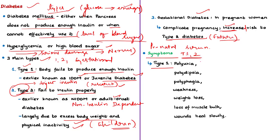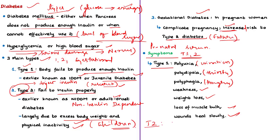Symptoms of Type 1 diabetes occur suddenly and include polyuria (frequent urination), polydipsia (feeling very thirsty), polyphagia (frequent hunger), weakness, weight loss, and loss of muscle bulk. People suffering from Type 1 diabetes also experience slow wound healing. Symptoms of Type 2 diabetes may be similar to those of Type 1 but are often less noticeable and can only be confirmed through medical diagnosis, meaning the disease may be diagnosed several years after its onset, which can complicate treatment.